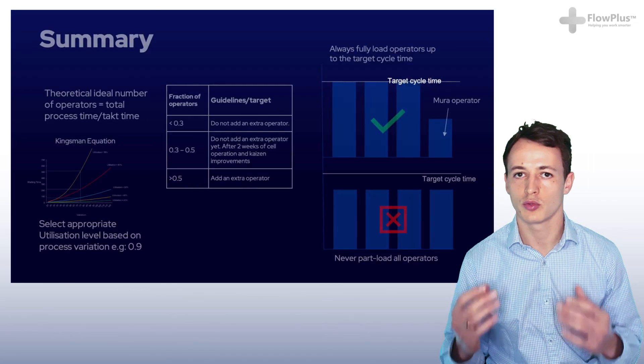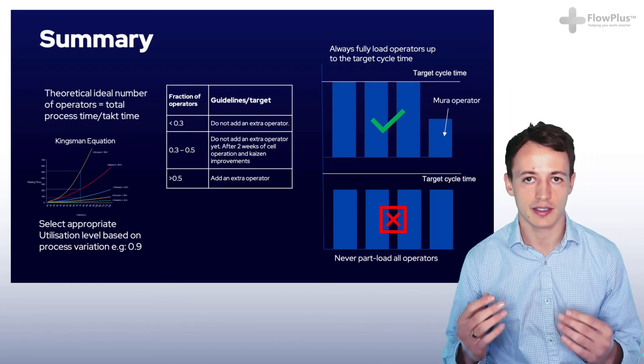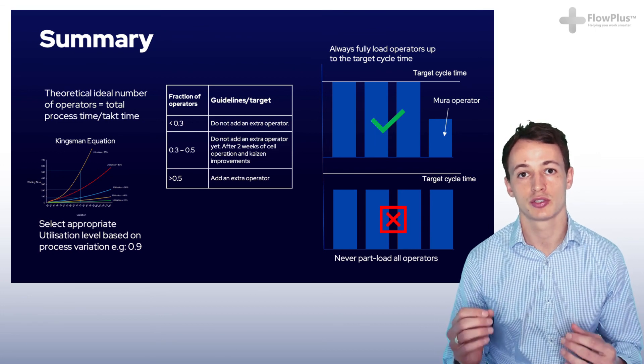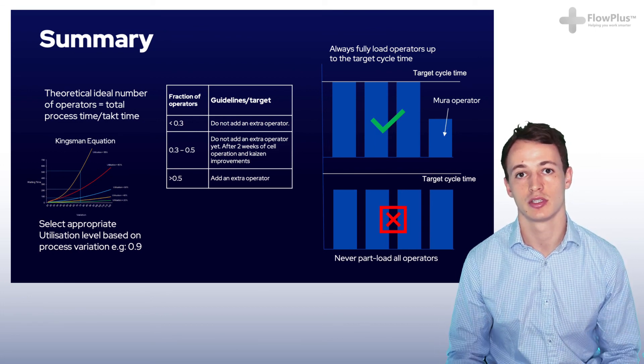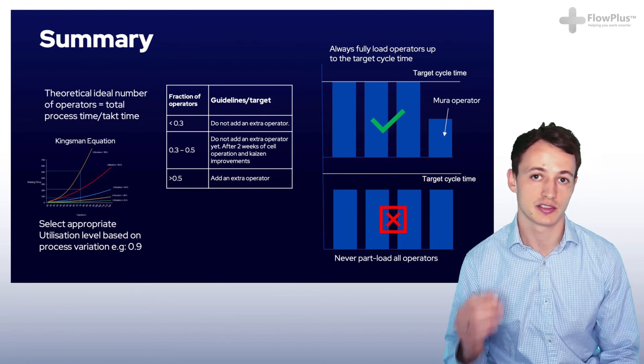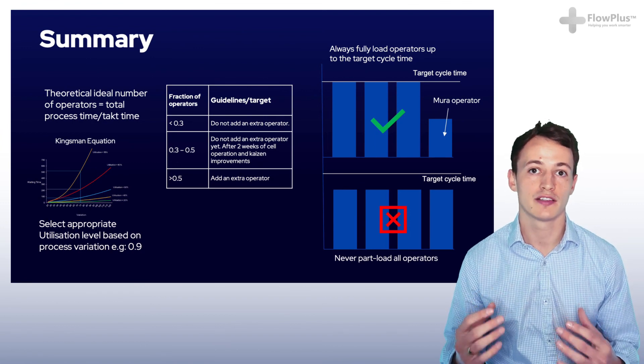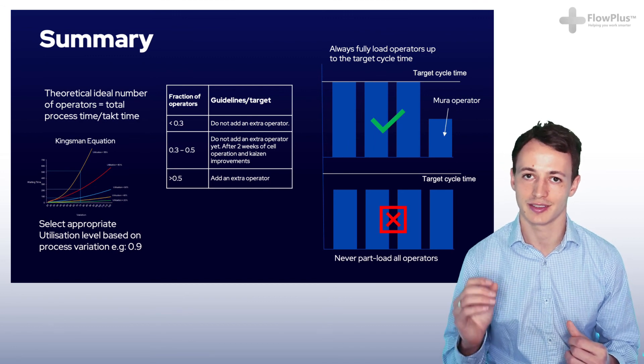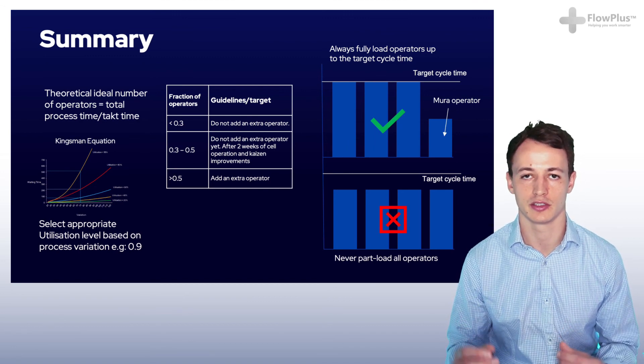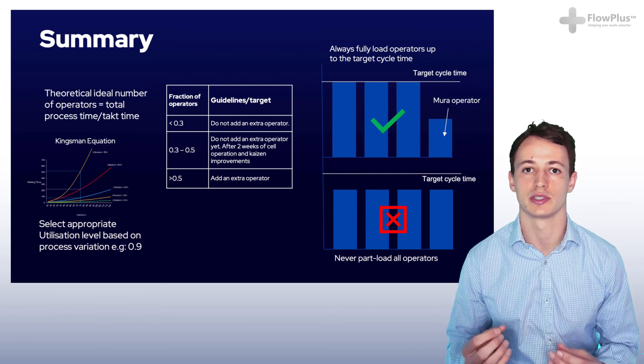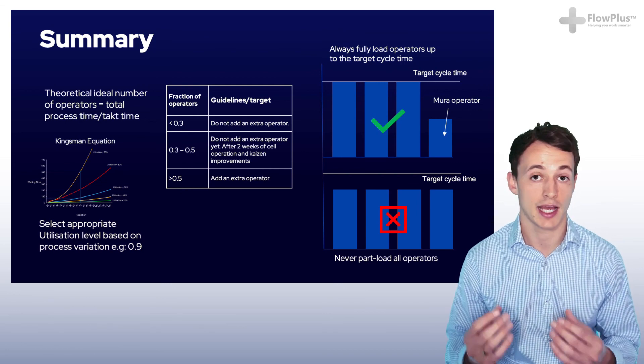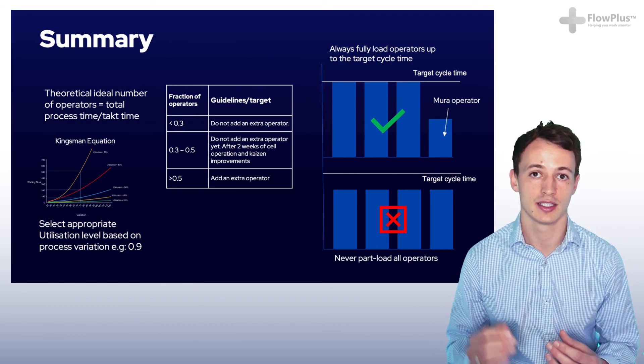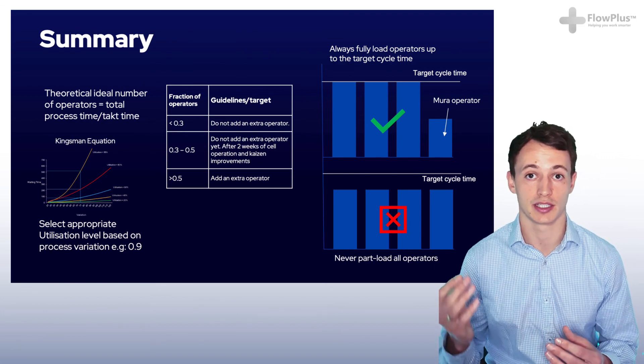So before we summarize, I want to just make you quickly aware that in many lean textbooks, what you'll read is they'll actually balance the line to the ideal theoretical number of operators to the takt time. We have purposely taught you to do it towards a targeted cycle time that takes into account utilization, because the last thing you want to do is overburden operators. And we know from the Kingman equation that as utilization gets near 100%, delays and queues exponentially grow.